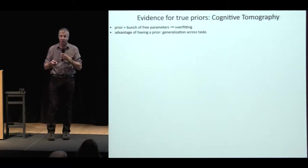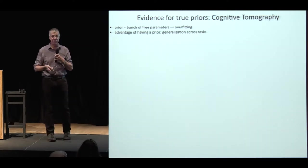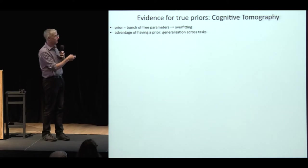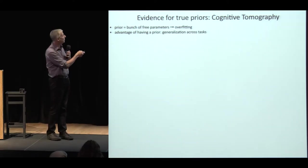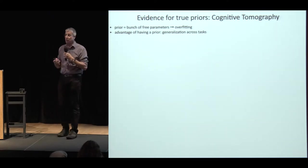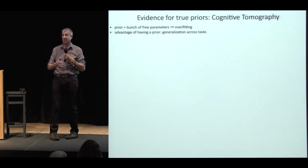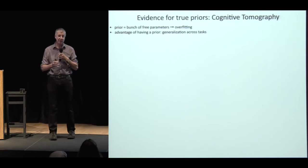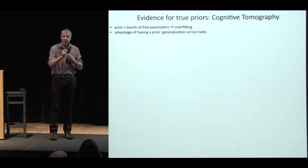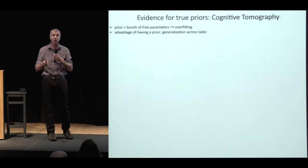But there's a problem. The doubters say you can always choose a set of priors to fit your data — priors are just free parameters, and if you're free to choose them, you can fit anything. So there's an overfitting problem. The real advantage of the Bayesian approach is if the priors are general across tasks — not task-specific. There have been remarkably few studies asking whether individual people have different priors, and whether the priors they have are similar or different across tasks.